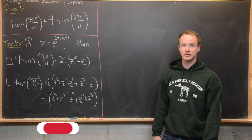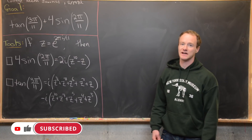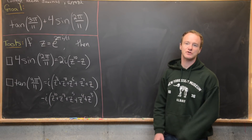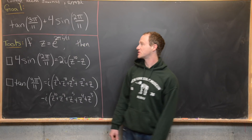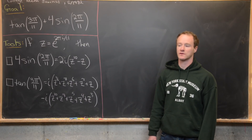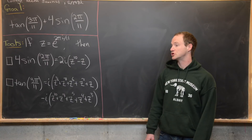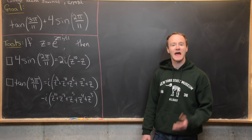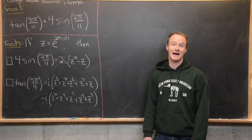Here we're going to derive a nice and pretty famous trigonometric identity. Although this isn't the first place this identity was mentioned, maybe the most famous place was in the College Math Journal from June 1982. We're going to find a nice closed form for tangent of 3π/11 plus 4 times sine of 2π/11. We're going to use Euler's formula, that is e^(iθ) = cosθ + i·sinθ, along with some stuff about roots of unity, and derive a couple of sub-identities along the way.